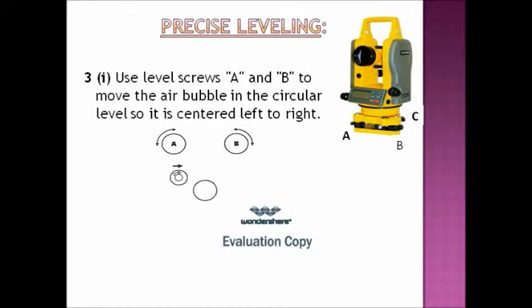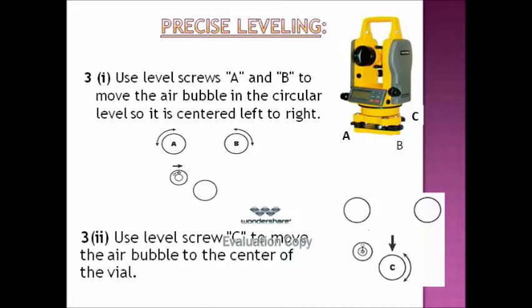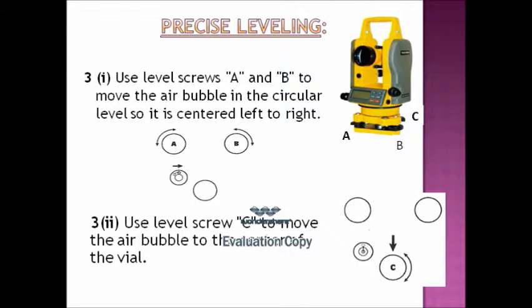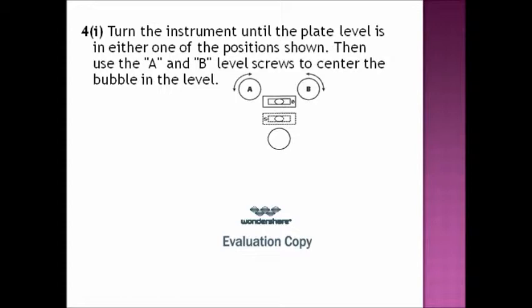In number 3, we see that we use level screws A and B to move the air bubble in the circular level so it is centered left to right. Then we use level screw C to move the air bubble to the center of the vial.